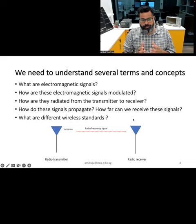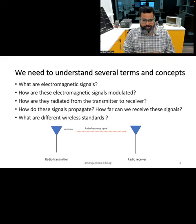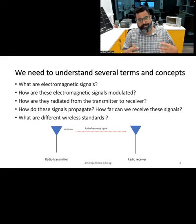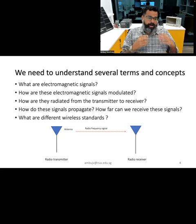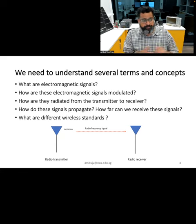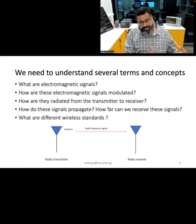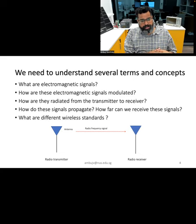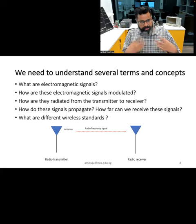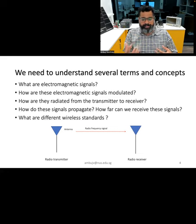To fully grasp the concept of radios and wireless communication, it is important to familiarize ourselves with several key terms and concepts. These include: what are electromagnetic signals? How are these electromagnetic signals modulated with information? How are modulated electromagnetic signals radiated from the transmitter to a receiver? How far can these signals travel? And based on the different frequency, how are different wireless standards designed and selected for our application?